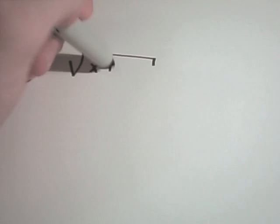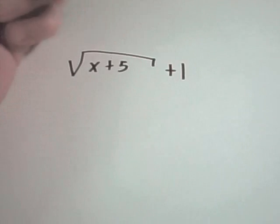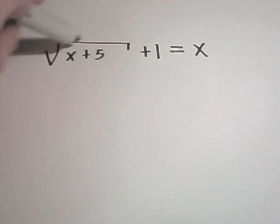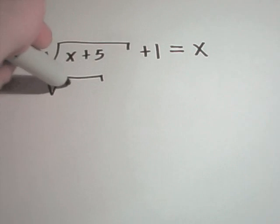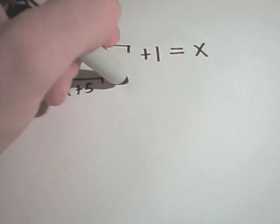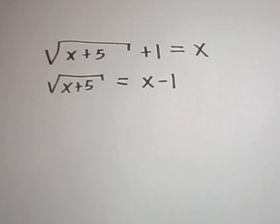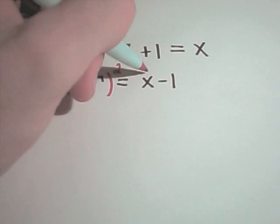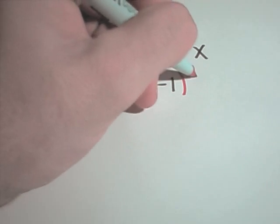Suppose I want to solve square root of x plus 5 plus 1 equal to x. The first thing I'm going to do is get my square root all by itself — square root of x plus 5 — by simply subtracting 1 from both sides. Now that I have my square root isolated, I'm going to square both sides.